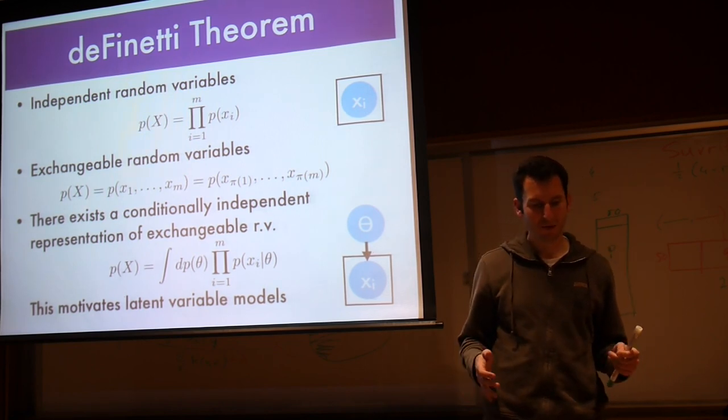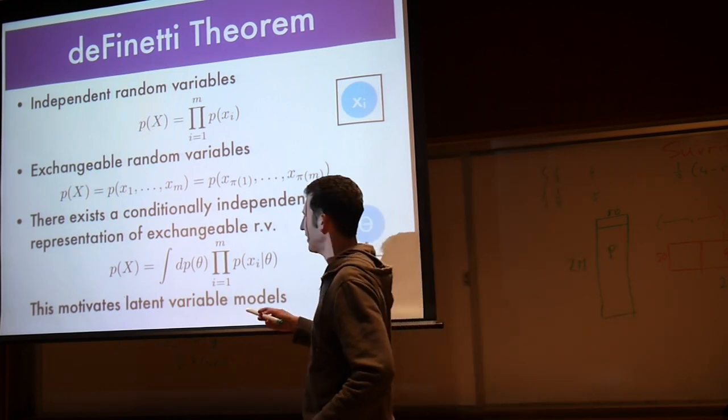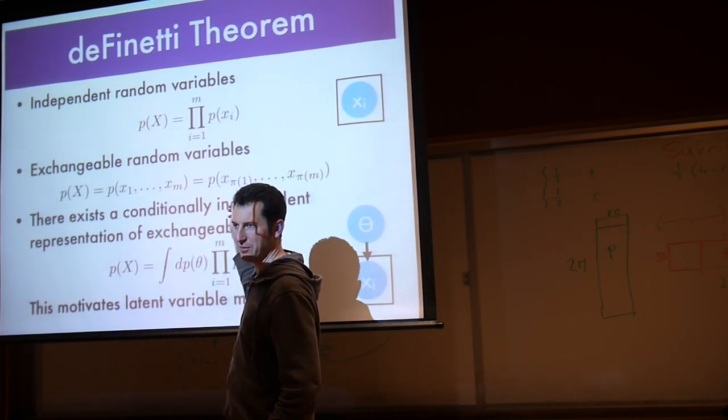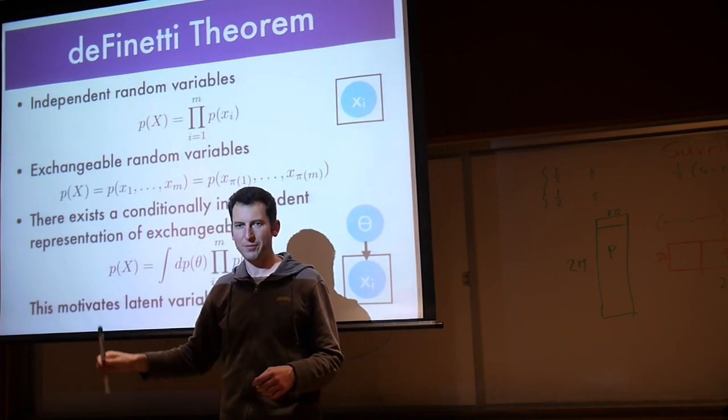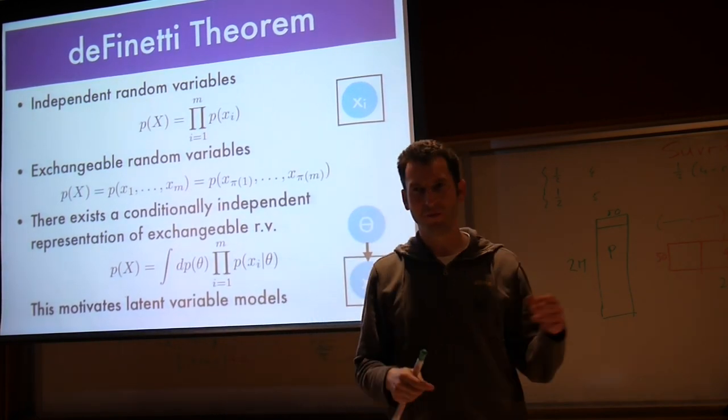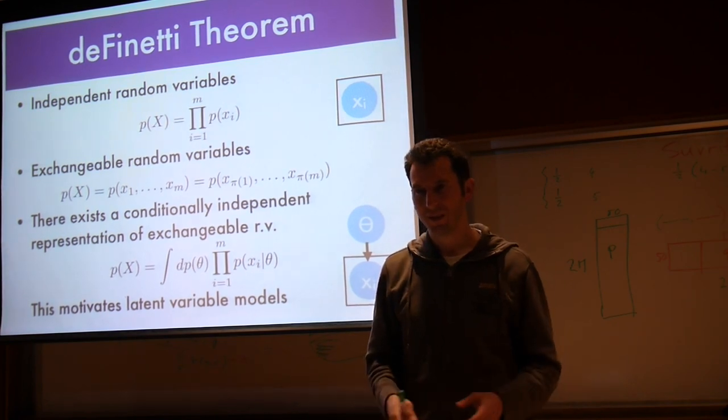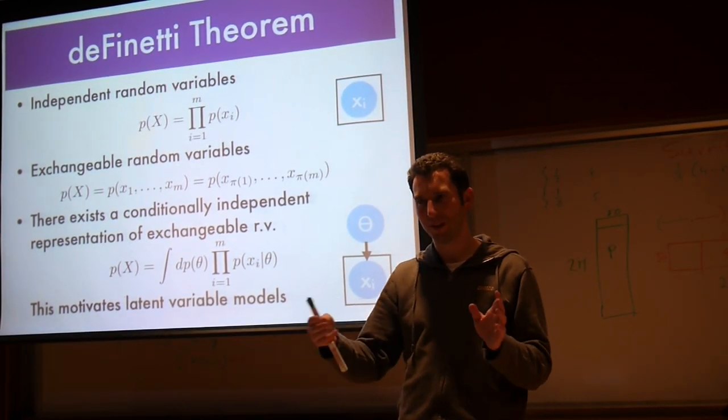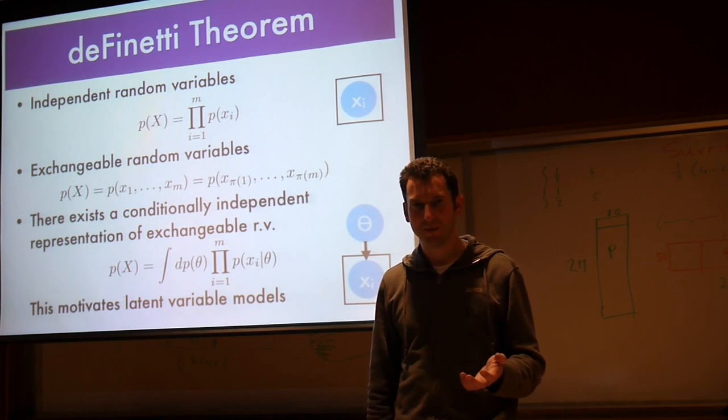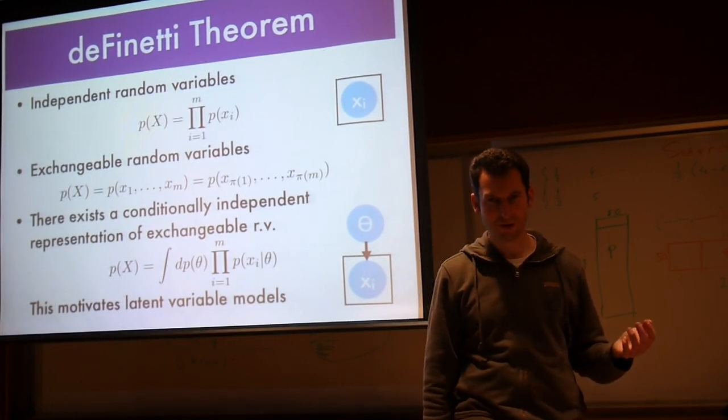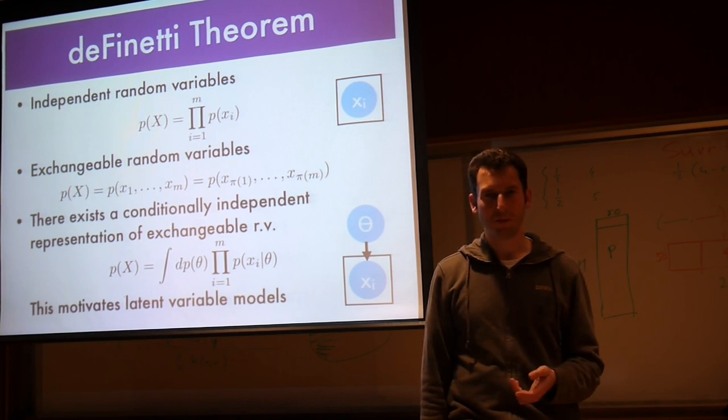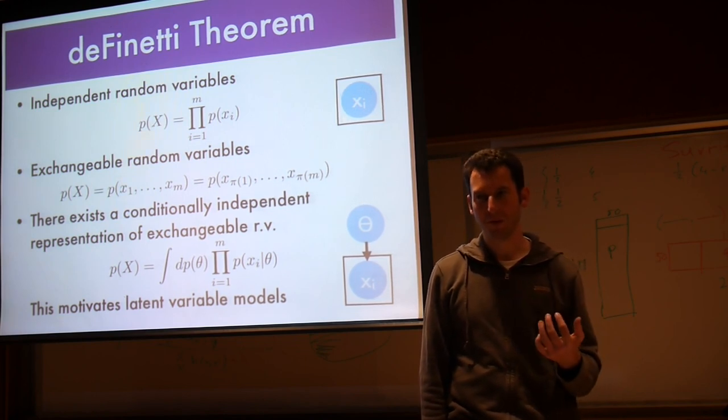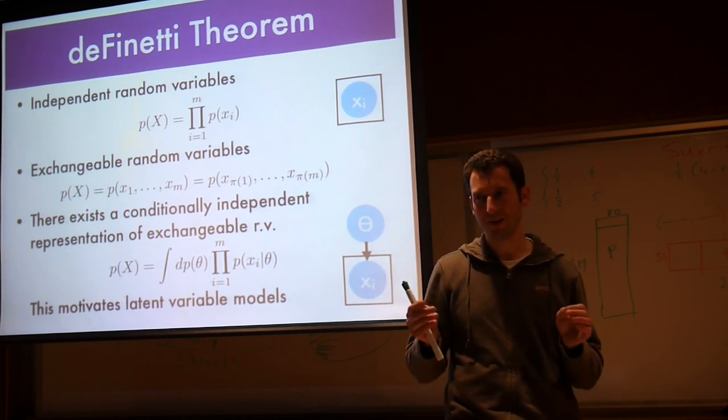Now, there's one step away from independence and that's exchangeable random variables. And in that case, you basically can take these random variables in any particular order and they will look like they're drawn from the same distribution. For instance, if I give you a distribution of the numbers from 1 to 5, this distribution of the sequence of numbers from 1 to 5 is not independent.